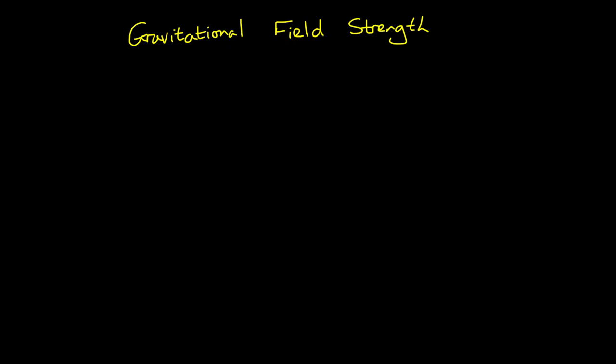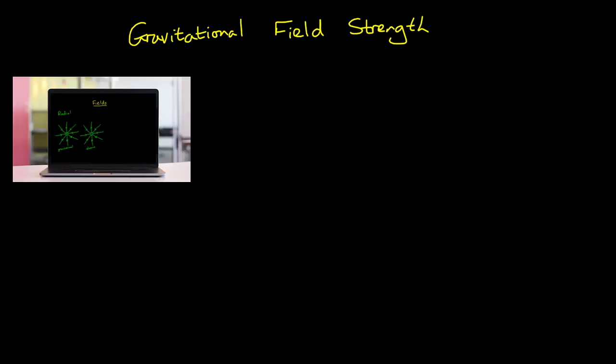In this video I will explain gravitational field strength and how it can be calculated. In a previous video I demonstrated how we can draw field lines to represent the strength of a gravitational field. As these radial lines spread out away from a body, the gravitational field strength decreases.